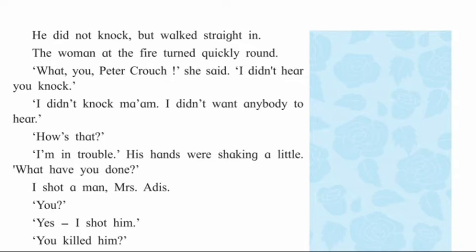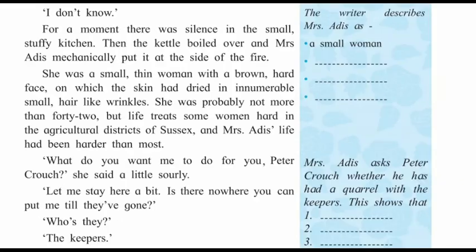Peter Crouch walked straight into the kitchen without knocking. Mrs. Addis turned quickly and asked him. He told her he was in trouble and his hands were shaking because of fear. When she asked what he had done, he directly told her: 'I shot a man.' She asked: 'You? Yes, I shot him.' 'You killed him?' 'I don't know.' For a moment, there was silence in the small, stuffy kitchen. Then the kettle boiled over and Mrs. Addis mechanically put it at the side of the fire.